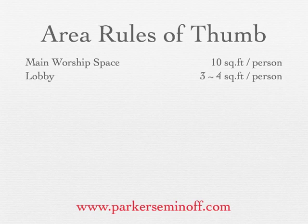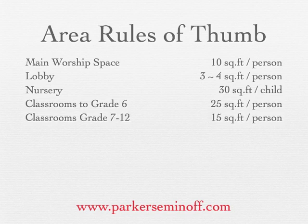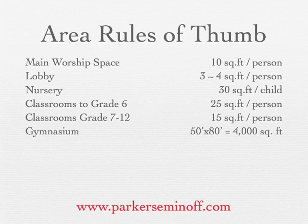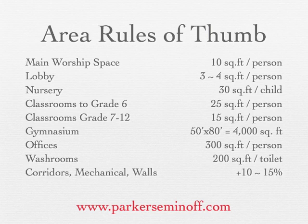The lobby will need 3 to 4 square feet per person in the auditorium and has potential for multi-purpose use. Nursery space will be around 30 square feet per child. Education space will require about 25 square feet per child up to grade 6, and up to grade 12 will need 15 square feet per person. A gymnasium will be approximately 50 by 80 feet, or around 4,000 square feet. Office area will need about 300 square feet per person, including work and meeting rooms. Washrooms will need 200 square feet per toilet — one per 60 men and one per 40 women. Corridors, mechanical rooms, and wall thicknesses will use an additional 10–15% of floor area. There are no set guidelines for storage space, as it varies from church to church.